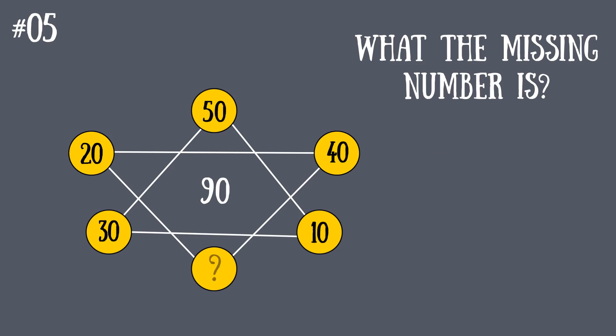Well, the right answer is 30. Look at the other triangle—there's a number 90 in the middle. If you sum all of its corners, you'll get it: 50 plus 30 plus 10 equals 90, right? This same principle works for our triangle as well because it also has 90 in the middle.